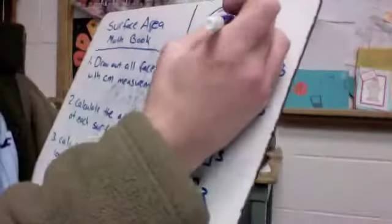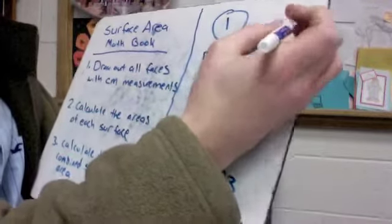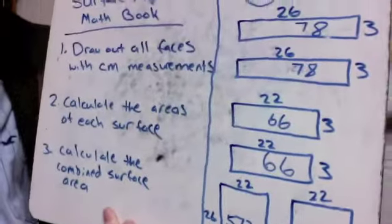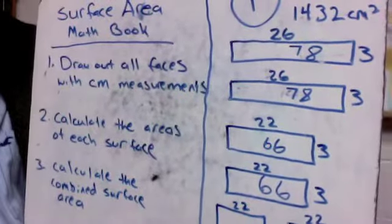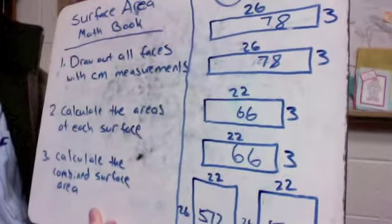And all together I got a surface area of 1432 square centimeters. So along the outside of the book on all the surfaces, I could fit 1432 of those square centimeters on the surface of this book.